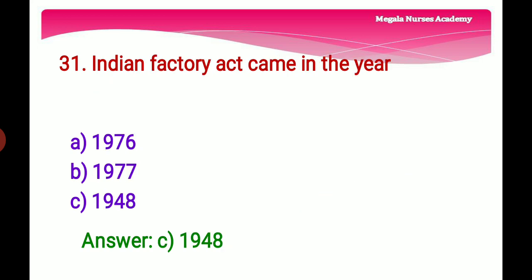Thirty-first question: The Indian Factories Act came in the year — Option A: 1976, Option B: 1977, Option C: 1948. The right answer is Option C, 1948, because the Indian Factories Act came into force in 1948 to consolidate and amend the law regulating labor in factories.